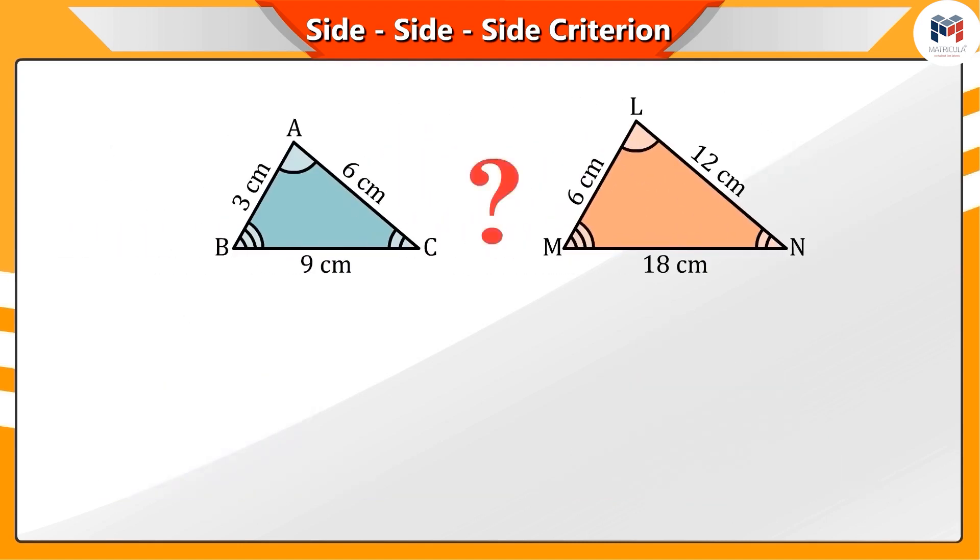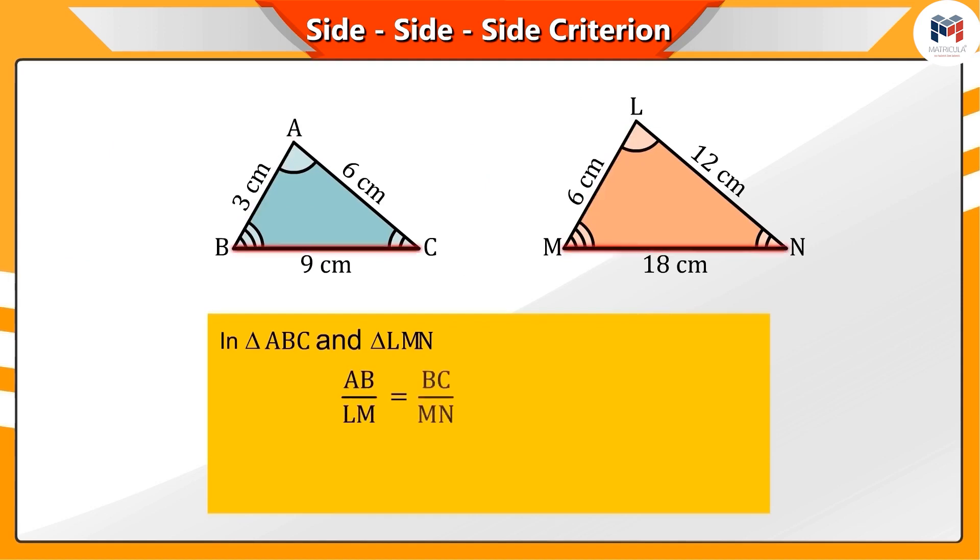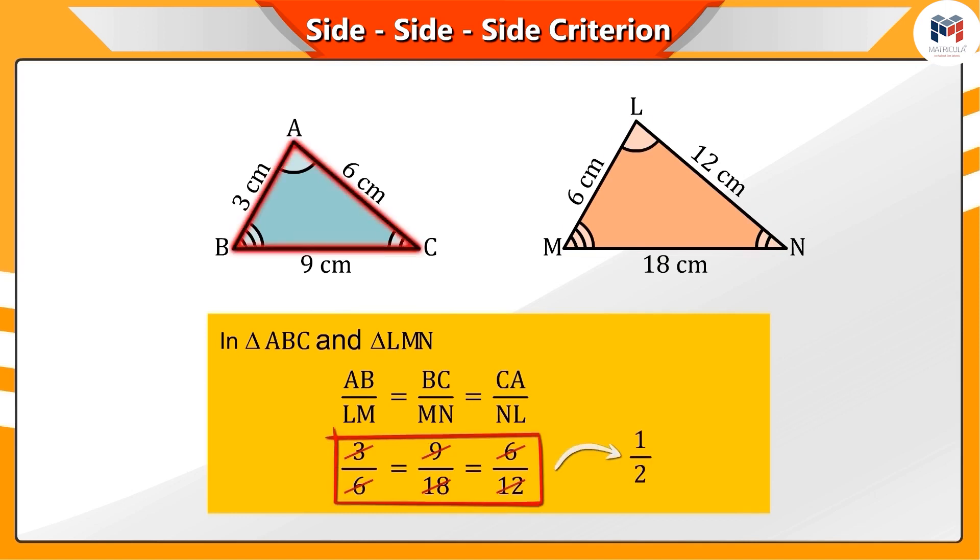What do you understand by these two triangles? If we look carefully, corresponding sides AB/LM, BC/MN and CA/NL, their ratios are equal to 1 by 2.